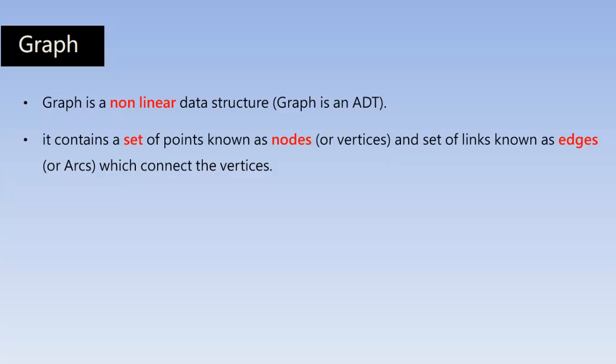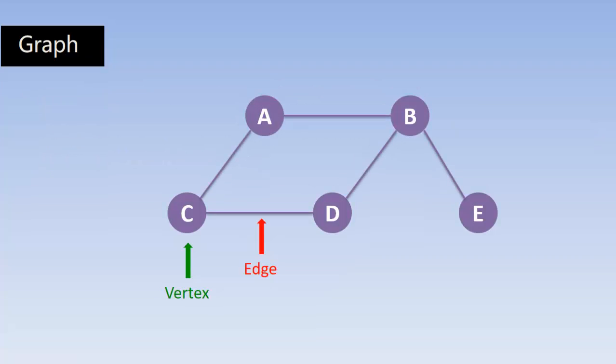It contains a set of points known as nodes or vertices and a set of links known as edges or arcs which connect the vertices. Let us understand this by seeing the diagram.